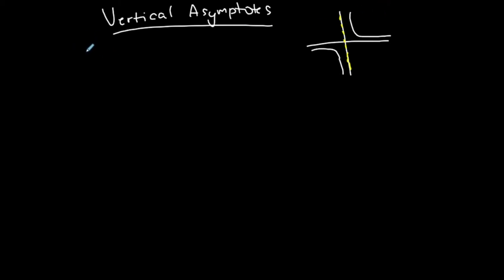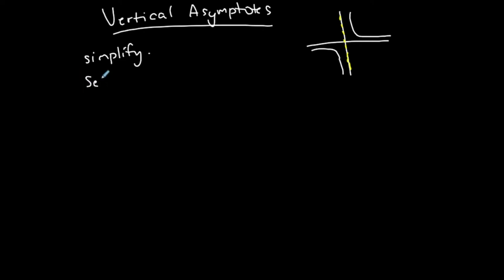How do you find a vertical asymptote? First, you have to simplify your function completely. And after you simplify, you're going to set the denominator equal to zero and solve.